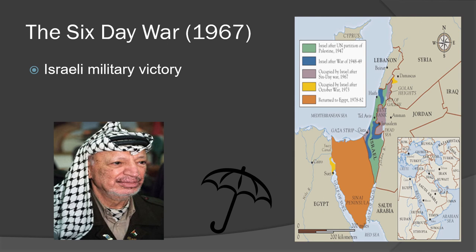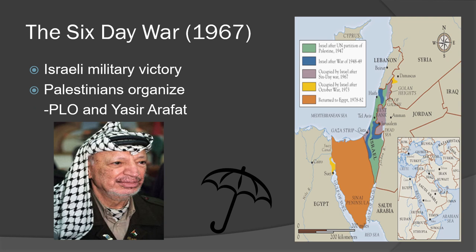Again, in 1967, the Israelis attacked Egypt and in six hours occupied the West Bank and the Gaza Strip — the Palestinian territories — beginning a 20-year occupation. The Palestinians decided they could no longer rely on other Arabs to fight for them, so they organized themselves under an umbrella group called the Palestinian Liberation Organization, or PLO. Yasser Arafat, who was the head of Fatah — the largest of these groups — became the head of the PLO.